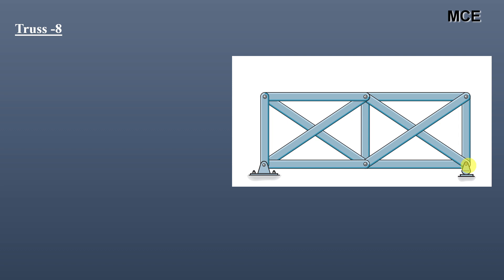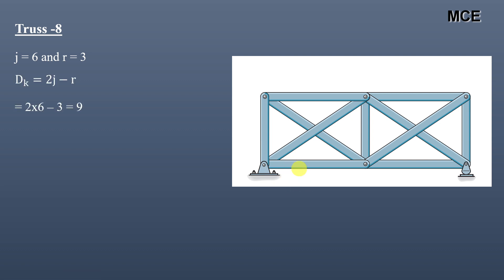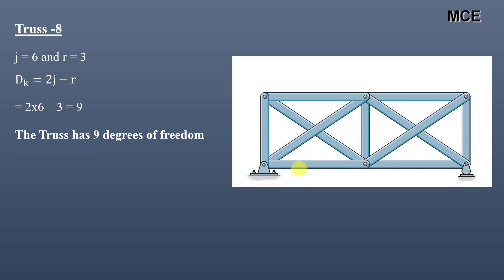For truss eight, this truss has six joints and three support reactions. The value of dk comes out to be nine, meaning this truss has nine degrees of freedom.